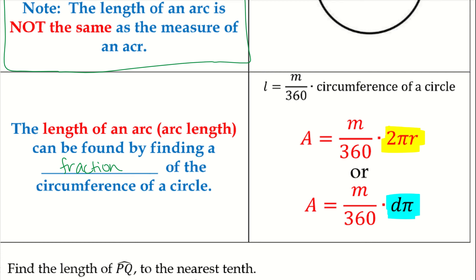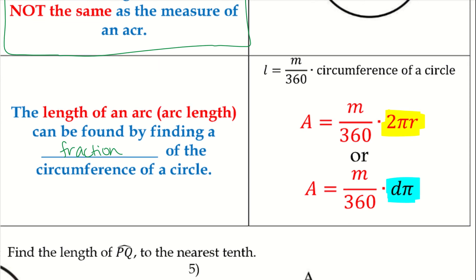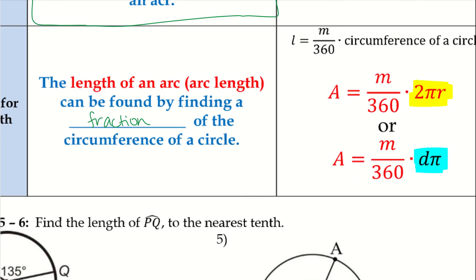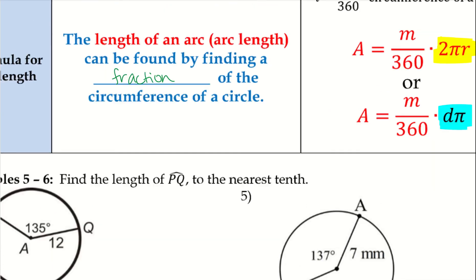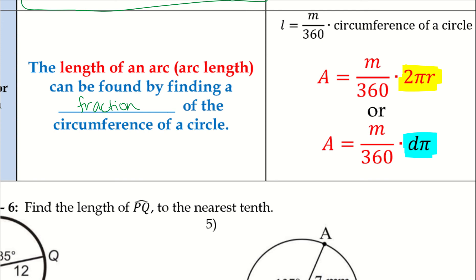Really pay attention to the wording. Right now we are doing arc length, so we use the circumference formula. But if the question asks for sector area, then you use the area formula. If you ever see the word area, that's when you know to use the area formula with M over 360. The M means the measure of the arc, same as last time.